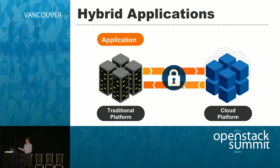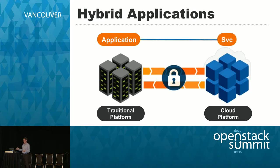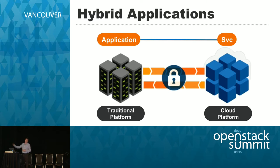The most potent answer is what I'd argue is the hybrid application. When thinking about an enterprise application and how to start improving it, the important thing is to consider the application itself — not the infrastructure, not how it communicates, but how the application is functioning. A hybrid application is really just a traditional app with one of its components or services either rewritten, optimized, or changed to start taking advantage of the cloud. I believe we're already seeing this is the way most businesses are going to start taking advantage of the cloud.